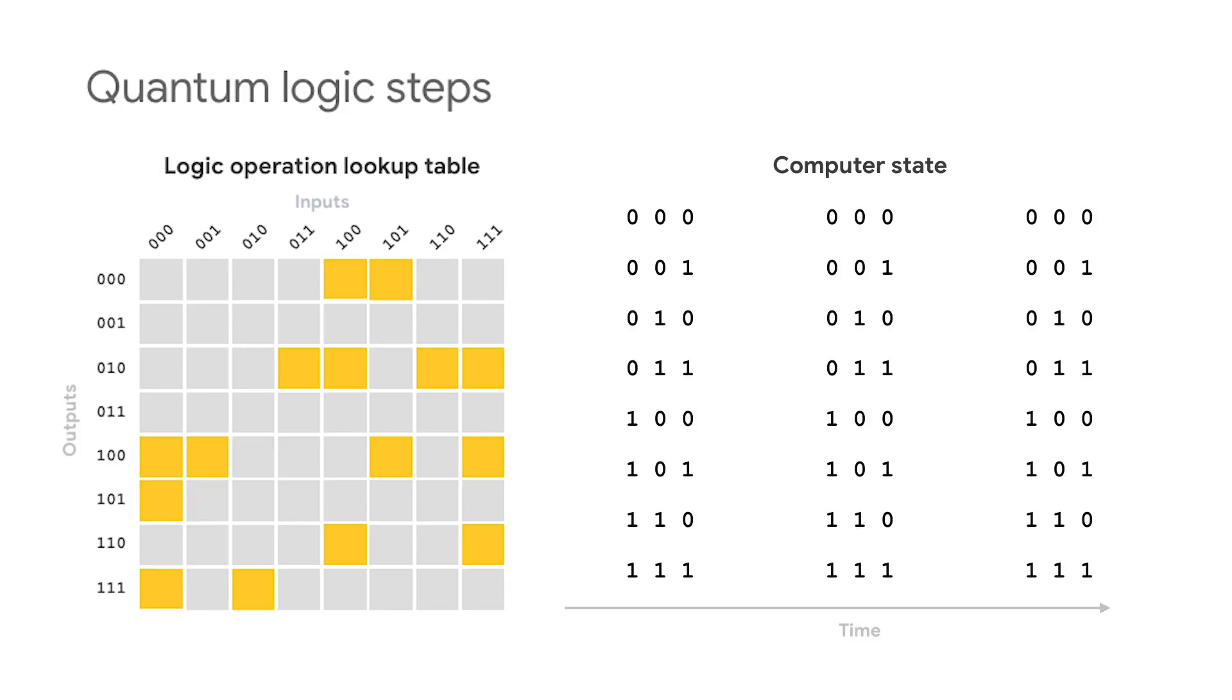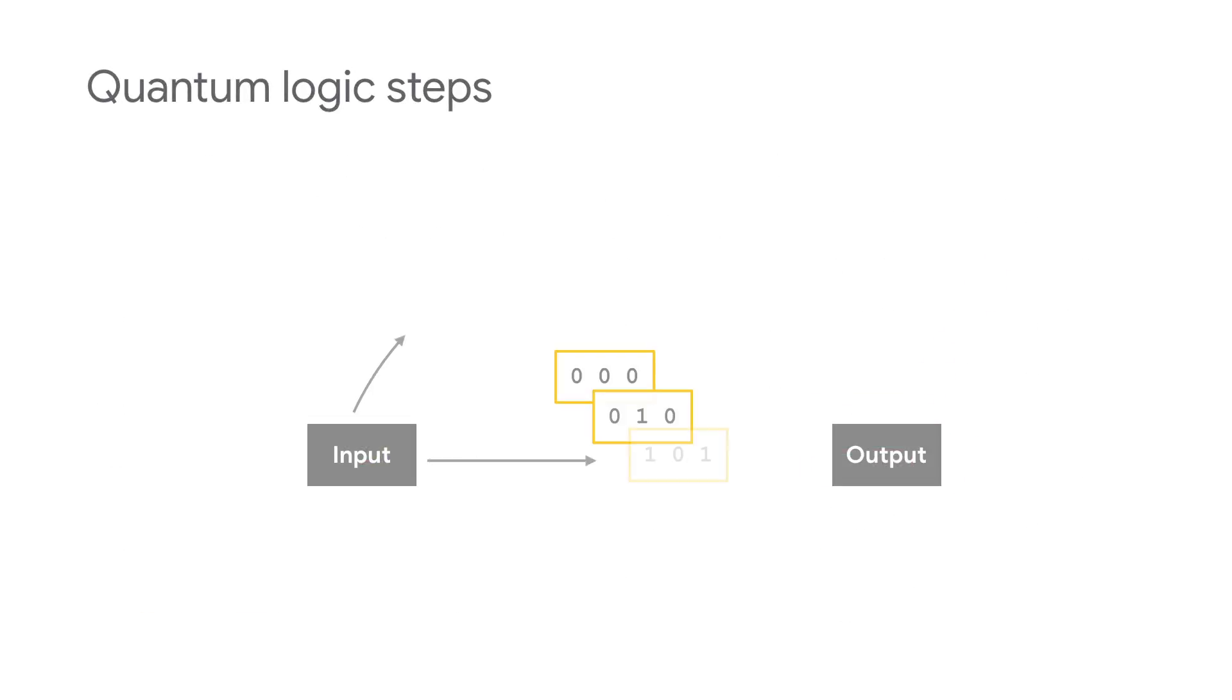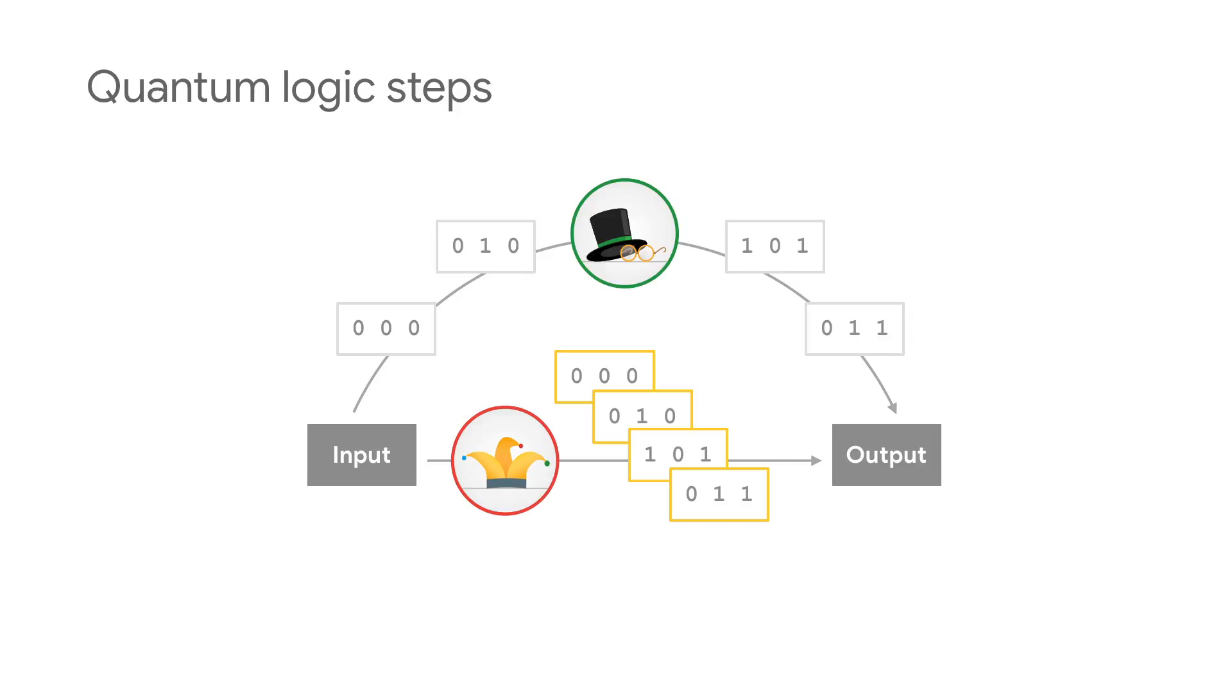For example, starting in 000, we go to a superposition of 100, 101, and 111. Then each of those three parts of the superposition state branches out to even more states. The extra complexity of quantum computers allows them to solve some problems faster than a classical computer ever could.